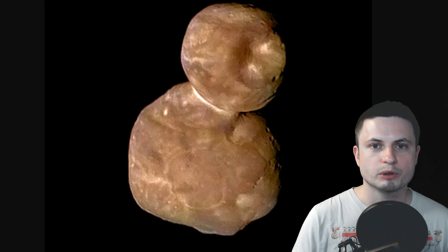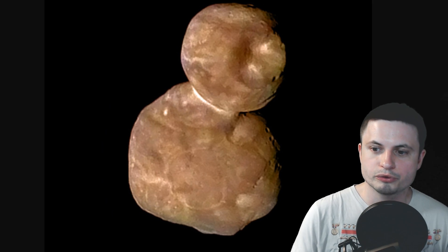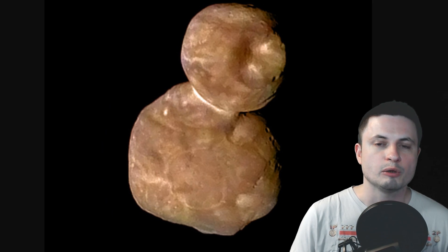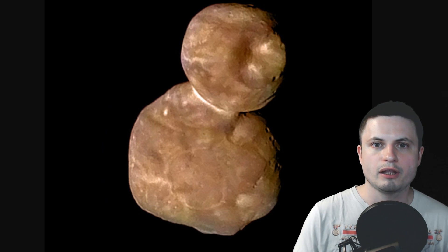As a matter of fact, Ultima Thule, when we flew by it, did not surprise scientists when they discovered that it was kind of brownish red as well. We expected it to have this color because we thought that just like so many other objects, it was covered in Tholines as well.